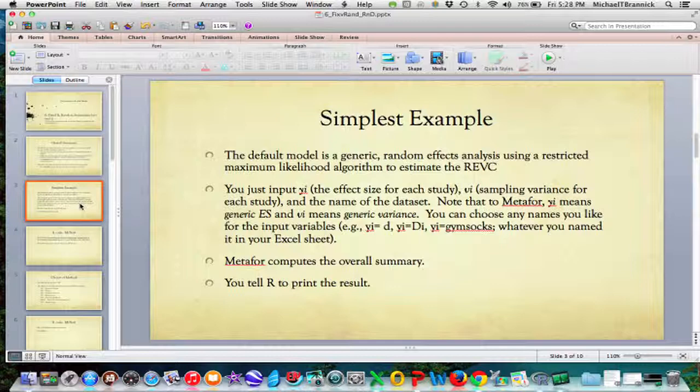To do this you just input y sub i, that's the effect size for each study, and v sub i, that's the sampling variance for each study, and then the name of the data set. Metafor thinks that y sub i means generic effect size and v sub i means generic variance.